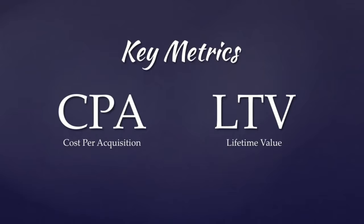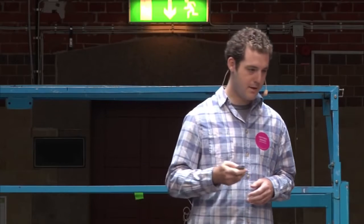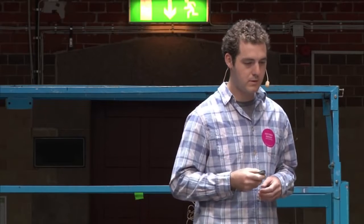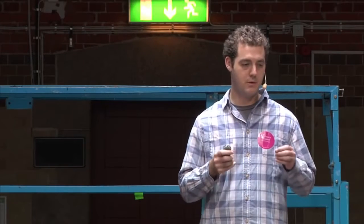There are two key metrics with distribution hacking. CPA, which is cost per acquisition — how much does it cost to acquire one new customer? And LTV, which is lifetime value — how much is that one new customer worth to our business? Our ultimate goal is to be cost effective when acquiring new users, so the goal is to have a CPA that is less than our LTV. Our acquisition cost should be less than the value of that customer to our business.